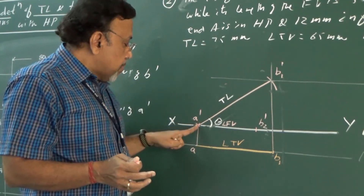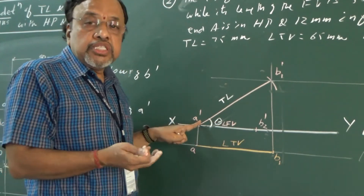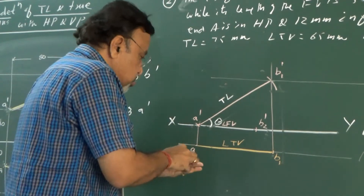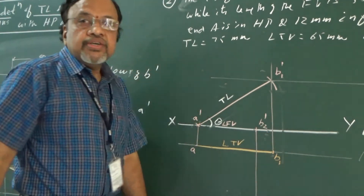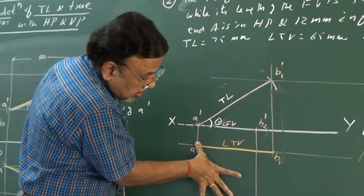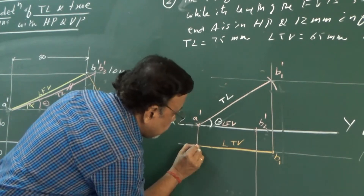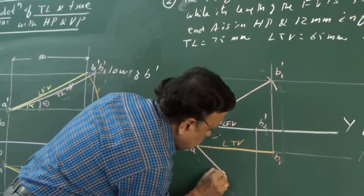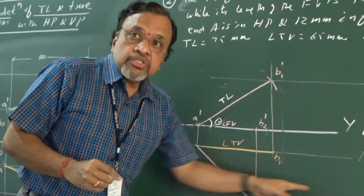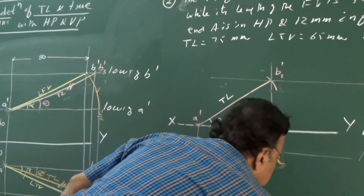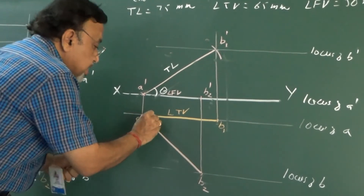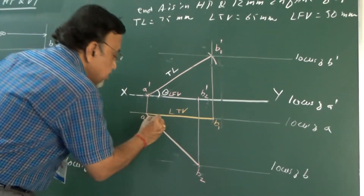What is the procedure? The line is parallel to XY in the front view, so we know that in the top view I will get the true length. If the line is parallel to XY in the front view, it is parallel to HP, and since it is parallel to HP, in the top view I see the true length. So, I draw a projector through this point, and with A as center and radius equal to the true length 75 mm, I cut it to get B2. This gives the locus of B, and the angle with reference to VP is phi.